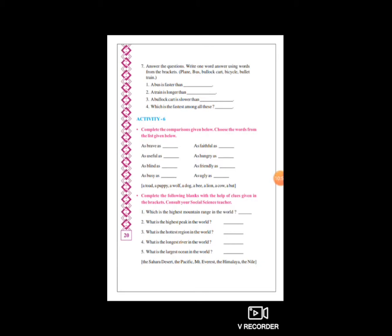As ugly as a toad - toad આવે. Toad - simple English માં - a toad એટલે a frog. Toad એટલે દેડકો. તે હંમેશા ugly, ગંદો હોય. બધાને સમજાવ્યું હોય.